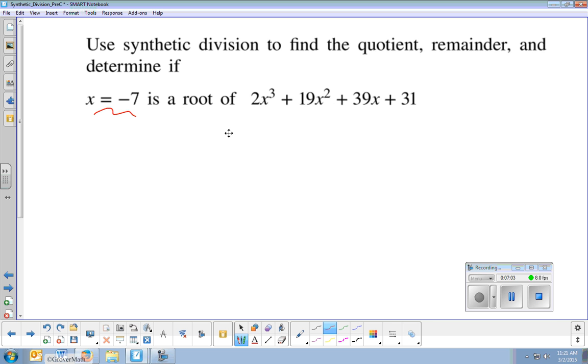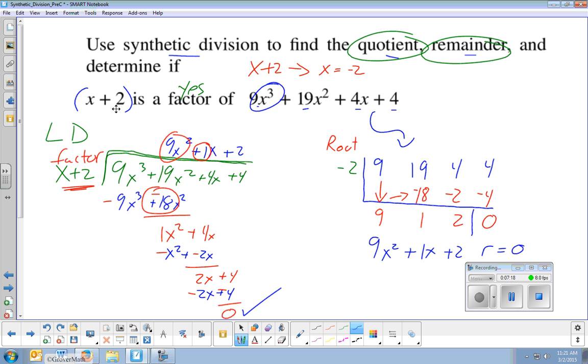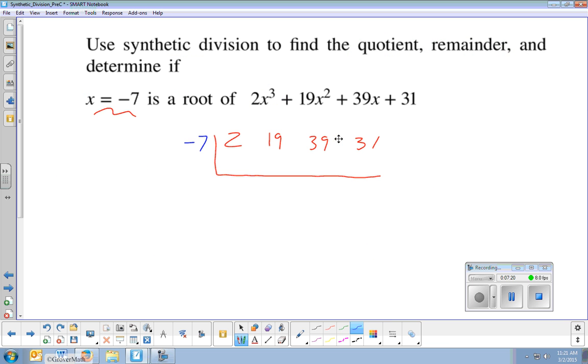So, first, rewrite it without variables. So, 2, 19, 39, 31. Put the bracket around it. Leave enough space below the numbers for another number. Remember, the root is negative 7. See, the last problem, they gave us a factor, so we had to convert it to a root. This time, it's a root, so we could just use it.